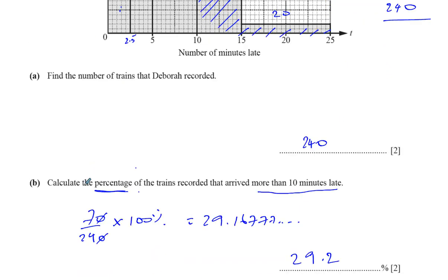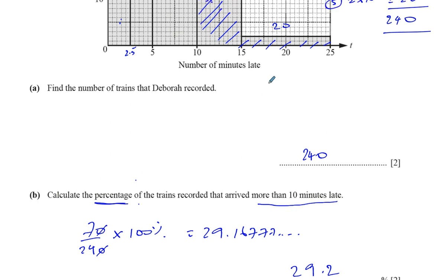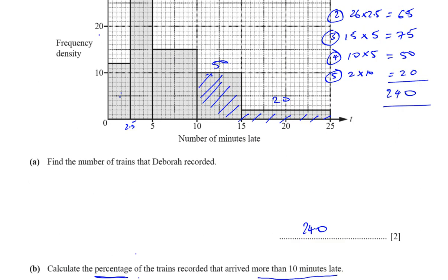Be careful that you read the question carefully — it's asking for the percentage, so you must convert your answer. Make a fraction of how many trains were more than 10 minutes late divided by the total number, then multiply by 100%. After the word 'of' comes the denominator; 'arrived more than 10 minutes late' is the numerator. That fraction must be converted into a percentage. Thank you very much.